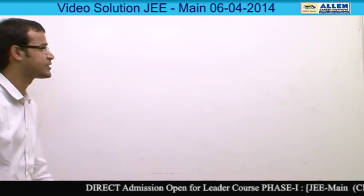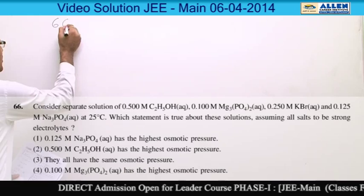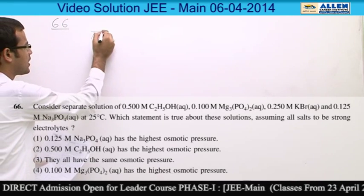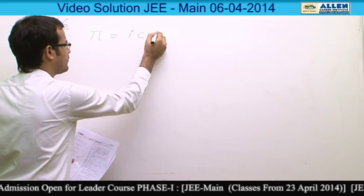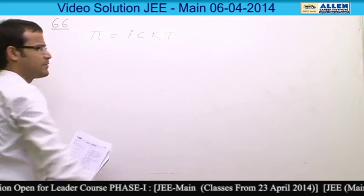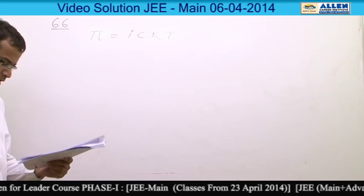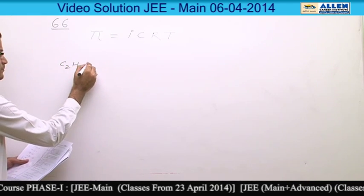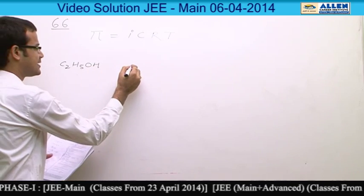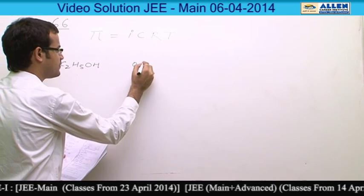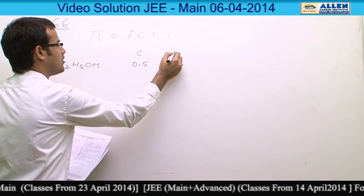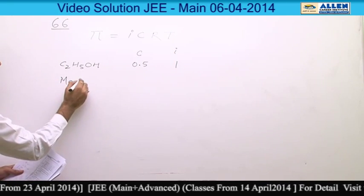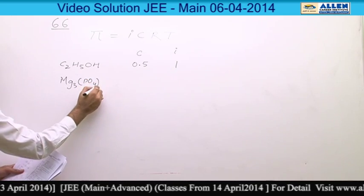Question number 66. Osmotic pressure depends on concentration as well as van't Hoff factor and formula is i multiplied by CRT. Given compounds are C2H5OH with concentration 0.5 and osmotic pressure 1, and Mg3PO4 twice with concentration 0.1 and osmotic pressure 0.5.